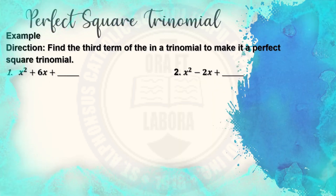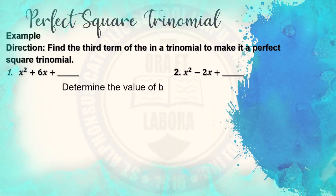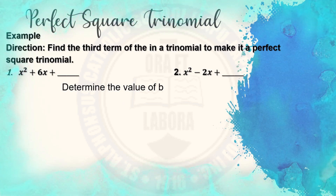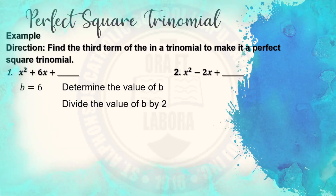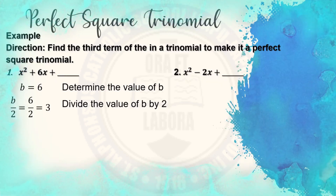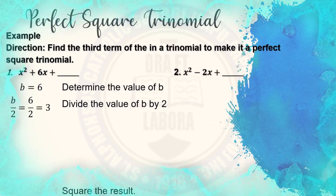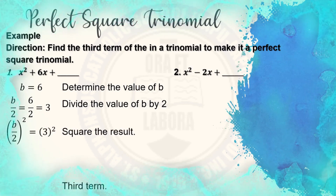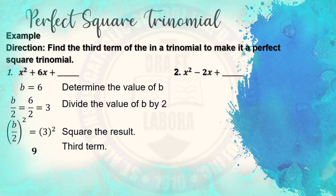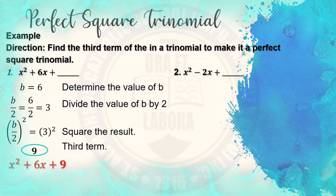We need to look for the third term. Step 1: determine the value of b. In our first example, the value of b is 6. Next, divide the value of b by 2 — 6 divided by 2 is 3. Next, square the result — 3 squared equals 9. So 9 will be our third term, and the new perfect square trinomial will be x squared plus 6x plus 9.